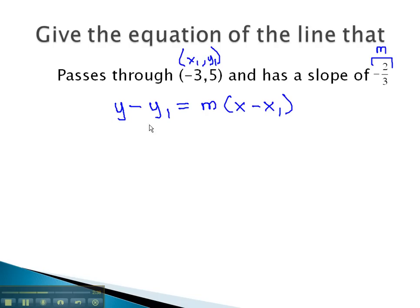To find our equation, we replace the key values that we have found. y minus y1, which we said was 5, equals m, or the slope, which we said was negative 2 thirds, times x minus x1, which is negative 3.